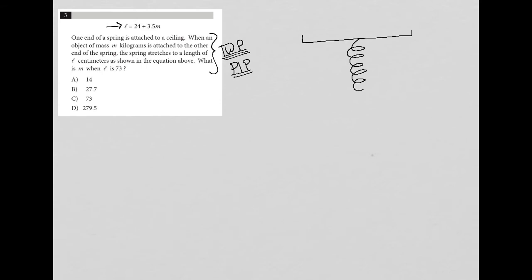Next sentence says when an object of mass M kilograms is attached to the other end of the spring, here's my mass of M kilograms. The spring stretches to a length of L. So how would I draw that?